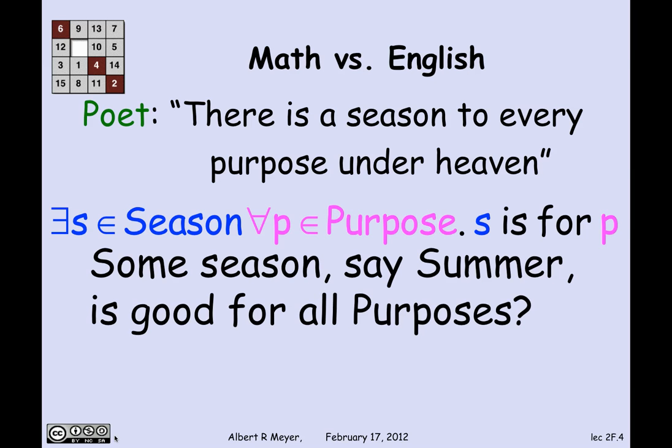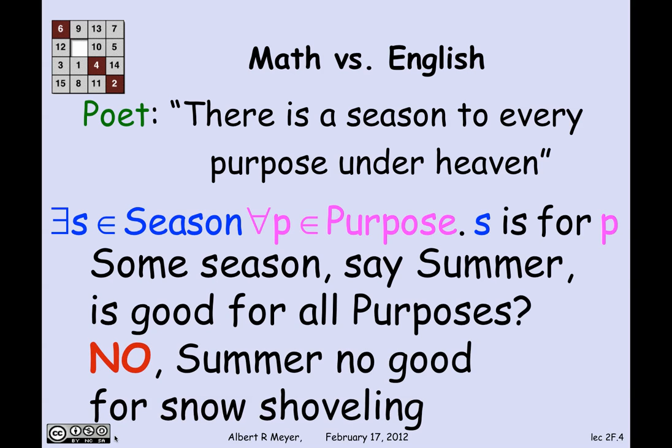Well, from the way the quantifiers work, that means there's some single season — say, summer — that's supposed to be good for all purposes. But that's not right, because summer is not good for snow shoveling. If your purpose is to shovel snow, then summer will not do as a season. So even though it's phrased 'there is a season to every purpose under heaven,' the intended translation is not 'there is one season for every purpose.'